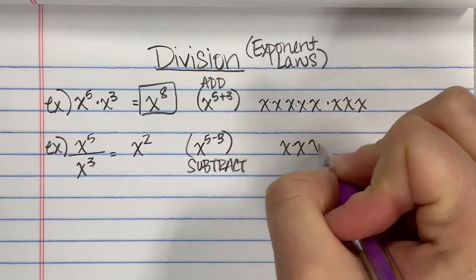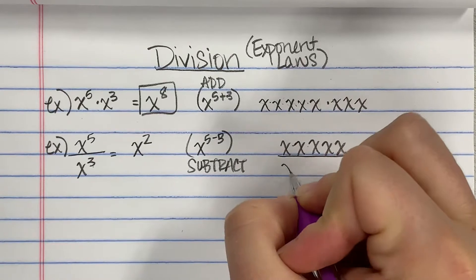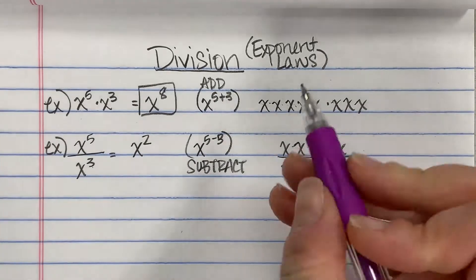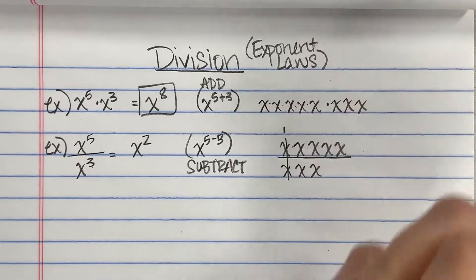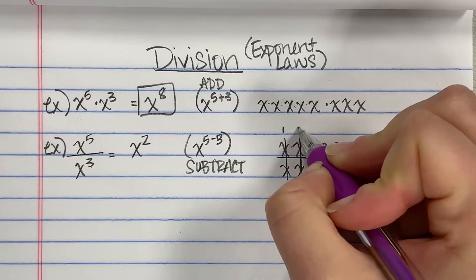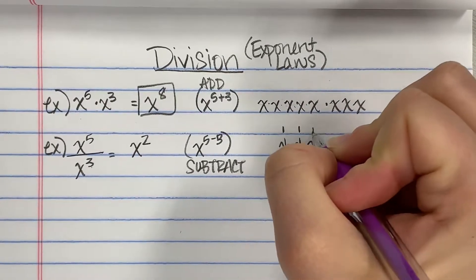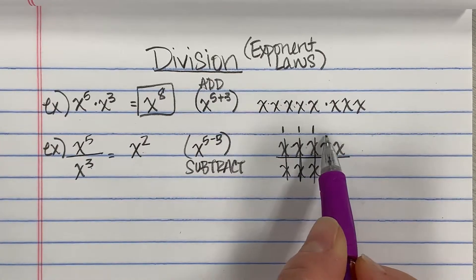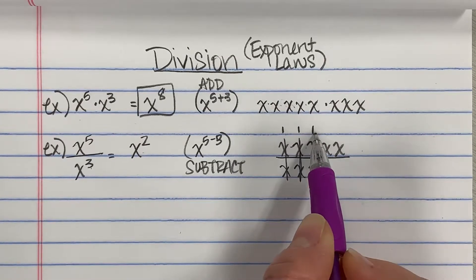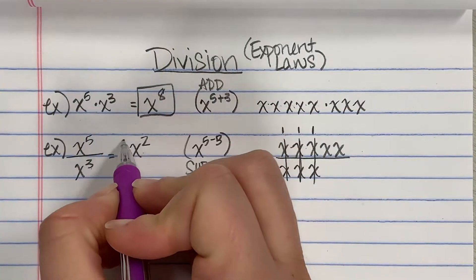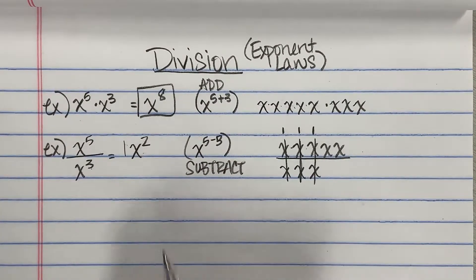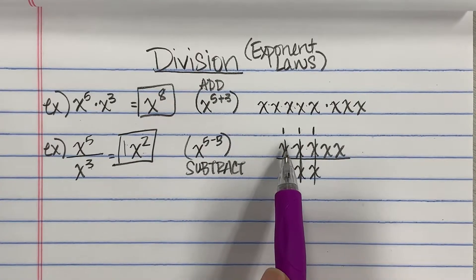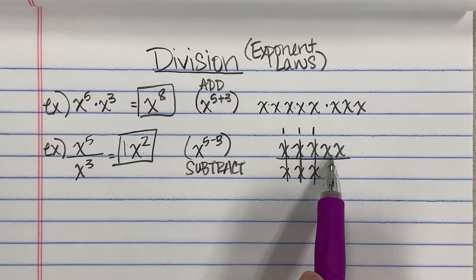Let's look at why that happens by looking at the expanded form. If I have x to the fifth divided by x to the third, anytime you have something divided by itself, it cancels out and becomes a one — x divided by x equals one. So I can see x squared remaining: x times x is x squared. The ones that canceled out, since this is all multiplication, one times one times one is still just one. So it's just x squared — two extra x's being multiplied together on the top.